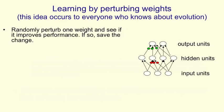The thing that occurs to everybody who knows about evolution is to learn by perturbing the weights. You randomly perturb one weight — meant to be like a mutation — and you see if it improves performance. If it improves the performance of the net, you save that change in the weight. You can think of this as a form of reinforcement learning: your action consists of making a small change, and then you check whether that pays off, and if it does, you decide to perform that action.